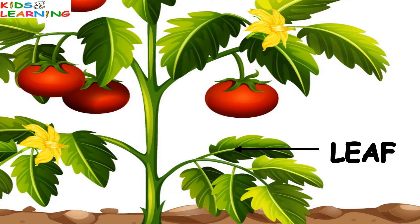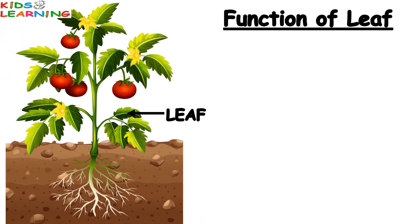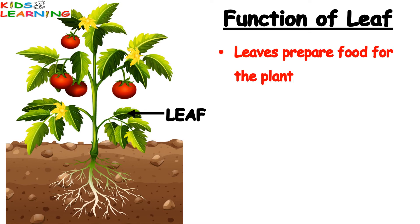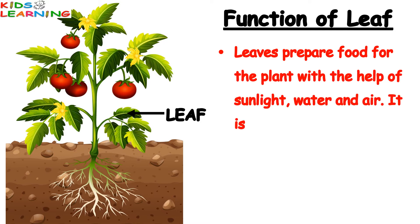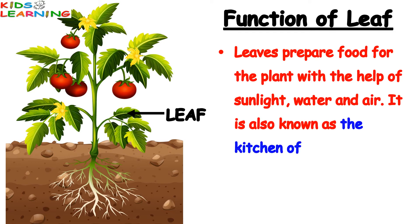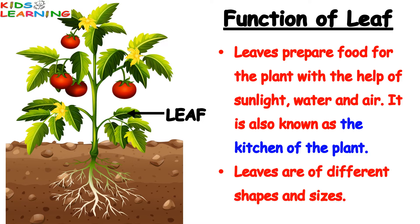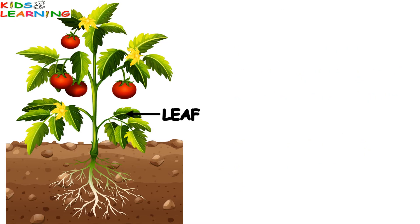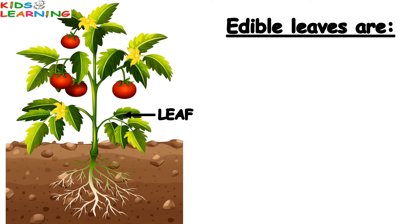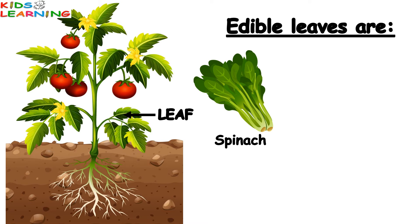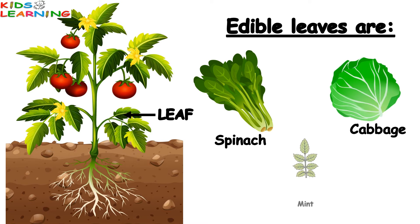Function of Leaf: Leaves prepare food for the plant with the help of sunlight, water and air. It is also known as the kitchen of the plant. Leaves are of different shapes and sizes. Some edible leaves are spinach, cabbage, and mint.